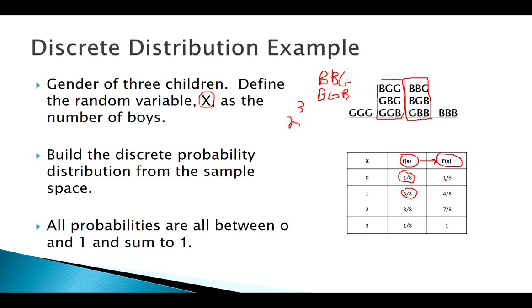So how do we find our CDF from here? Well our CDF and our PMF will always look the same for the first value of x, because there's nothing to accumulate. But so how do we get to this four eighths? Well that was one eighth plus three eighths.